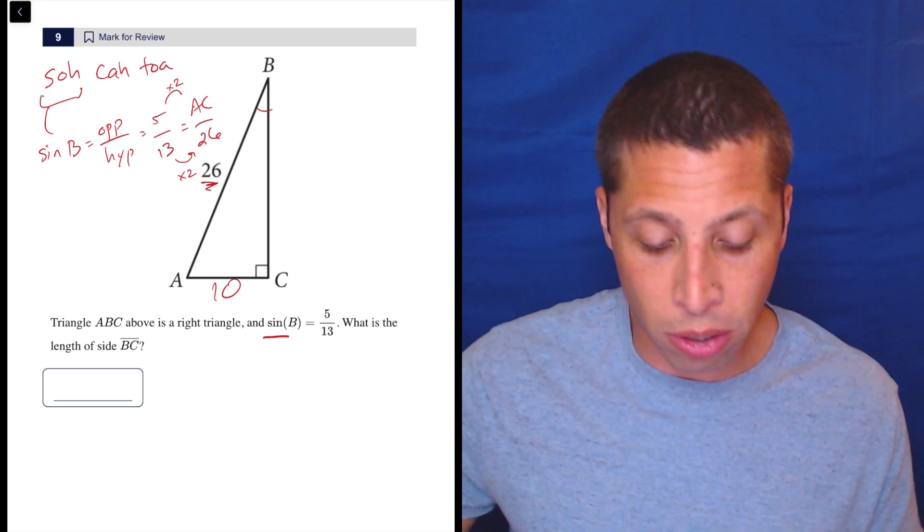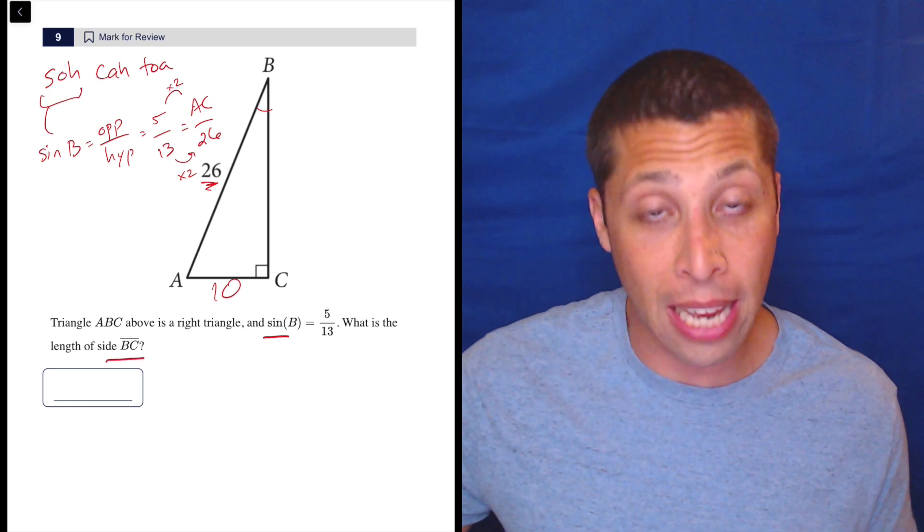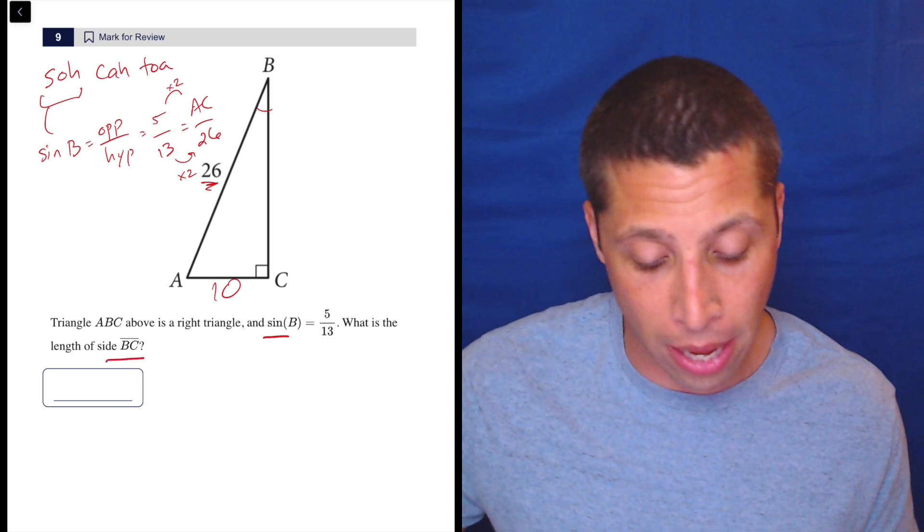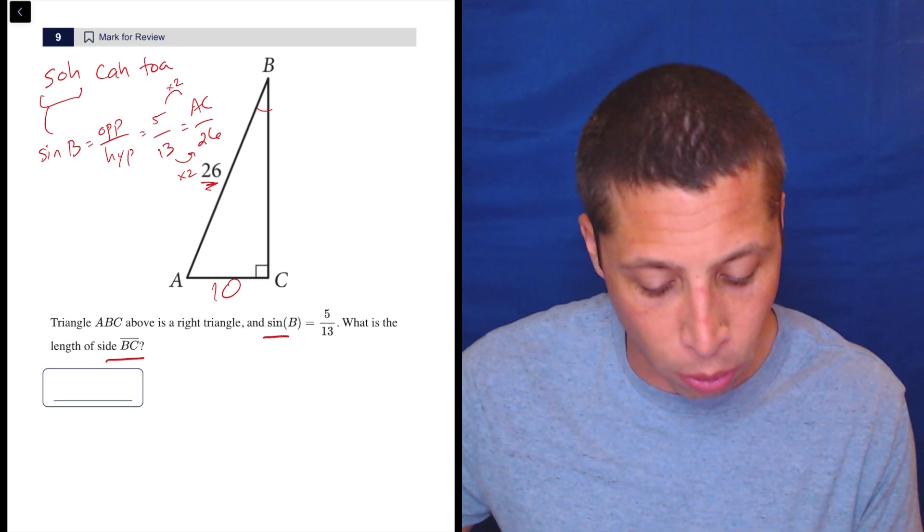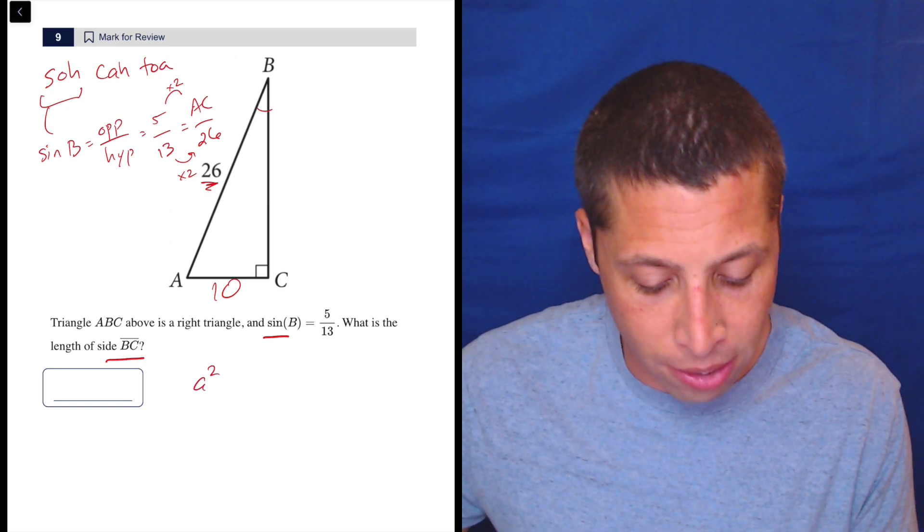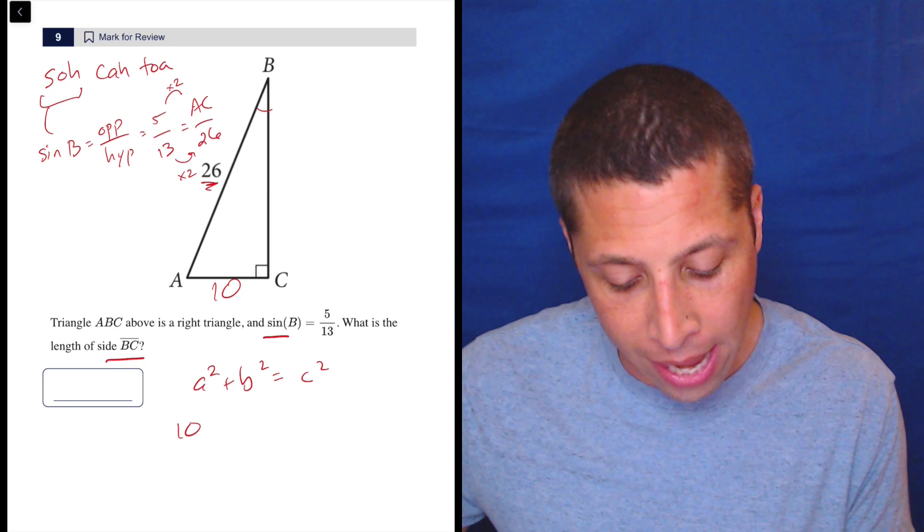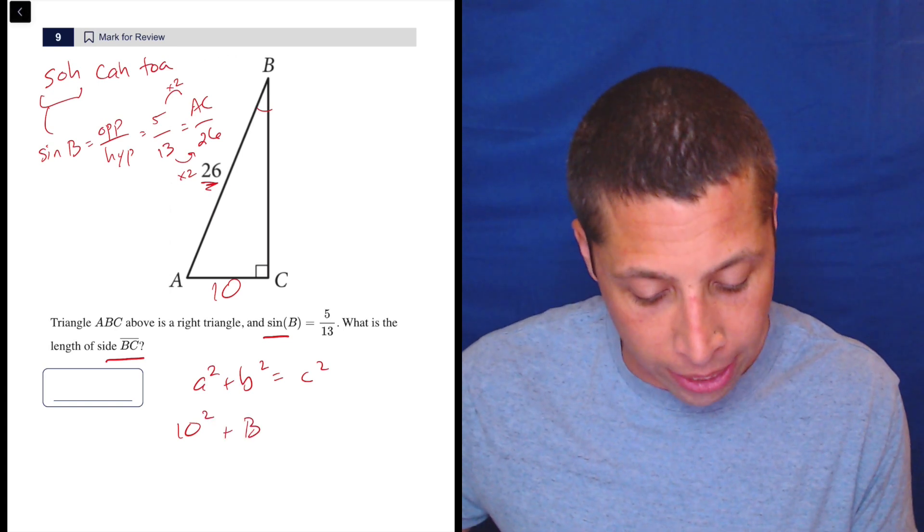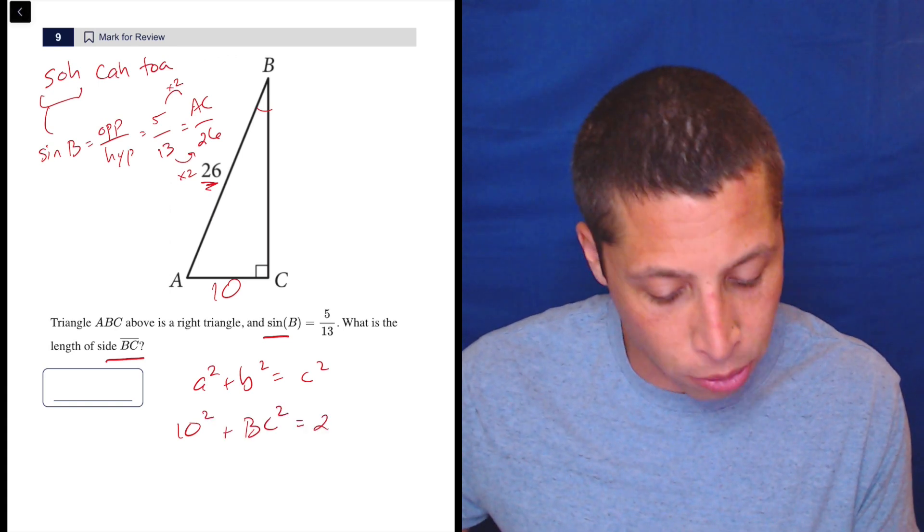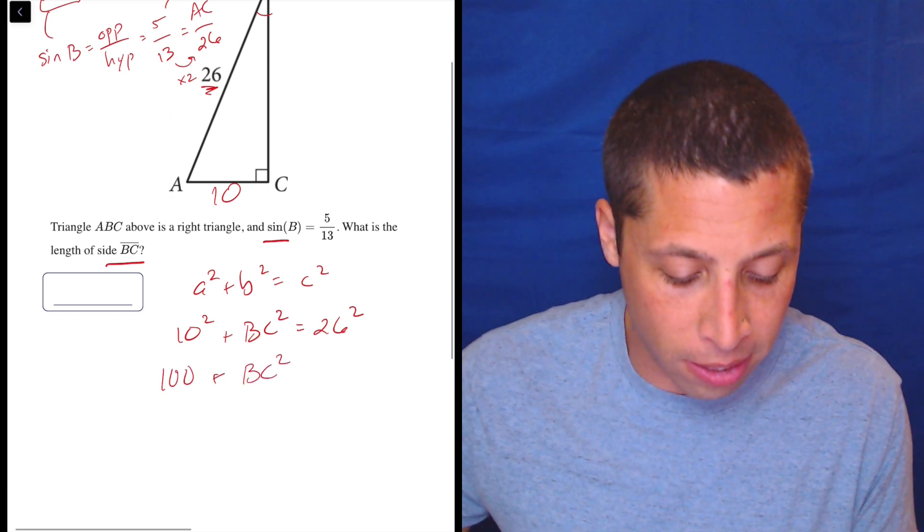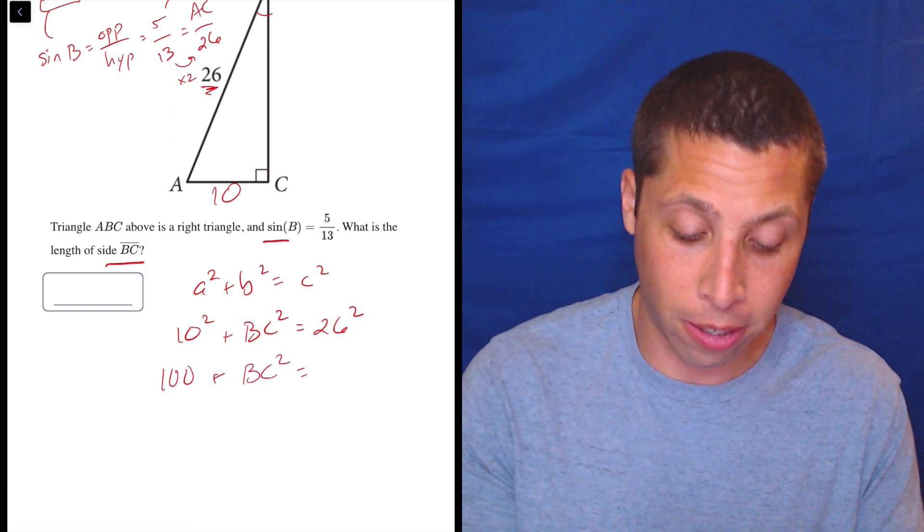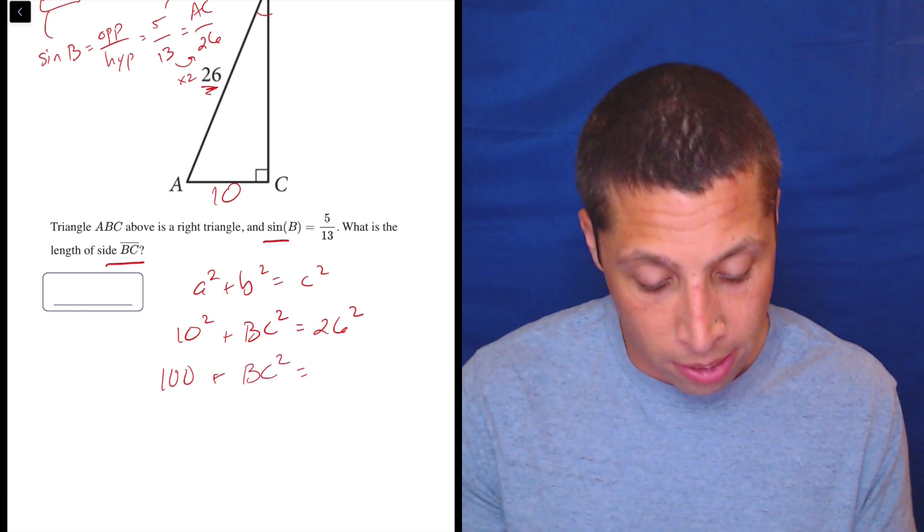Now we can just go to some pretty basic Pythagorean theorem to get BC. Some of you would have skipped this step and known what the answer is going to be pretty confidently right away, but let's just do it the old-fashioned way. First, we have A squared plus B squared equals C squared. 10 is my leg, my other leg is BC, and my hypotenuse is 26. So 100 plus BC squared is—calculator time—26 squared, 676.